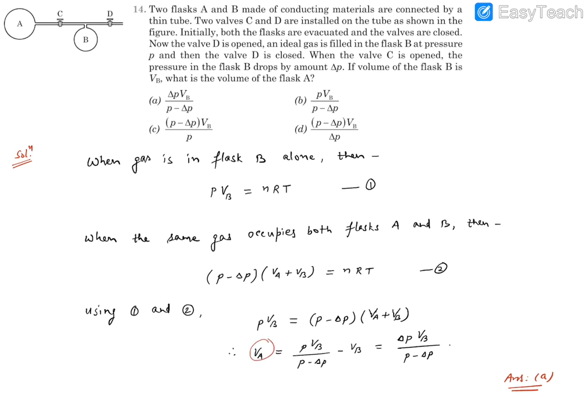When you simplify for VA, you will find this, which can further be simplified. VA comes out to be delta P times VB divided by P minus delta P. If you look at options, you'll find option A to be perfectly matching. Hence A is the correct response. Thank you.